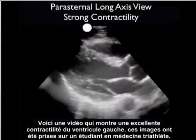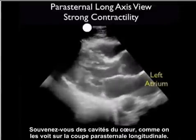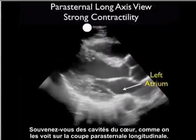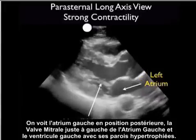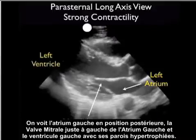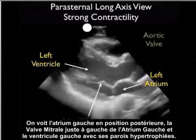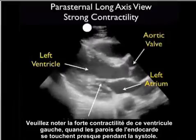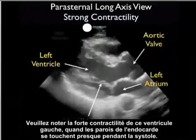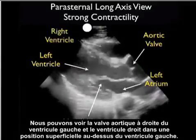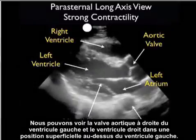Here's a video clip showing excellent contractility of the left ventricle as taken from a medical student triathlete. Recall the chambers of the heart as taken from the parasternal long axis plane: the left atrium in a posterior location, the mitral valve just to the left of the left atrium, and the left ventricle with its hypertrophic walls. Notice the strong contractility of this left ventricle as the endocardial walls almost meet during systole. We see the aortic valve to the right of the left ventricle and the right ventricle in a superficial location above the left ventricle.